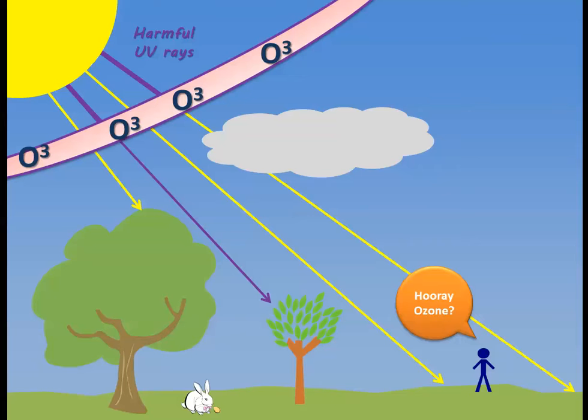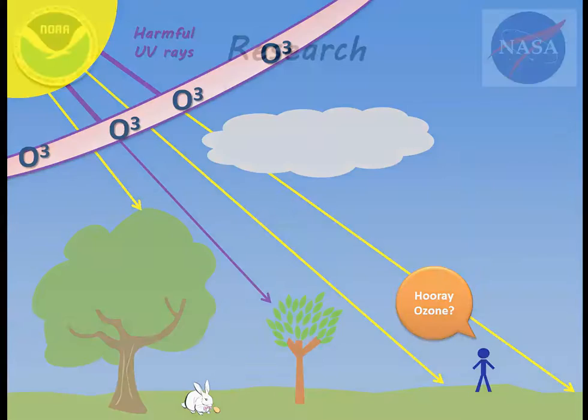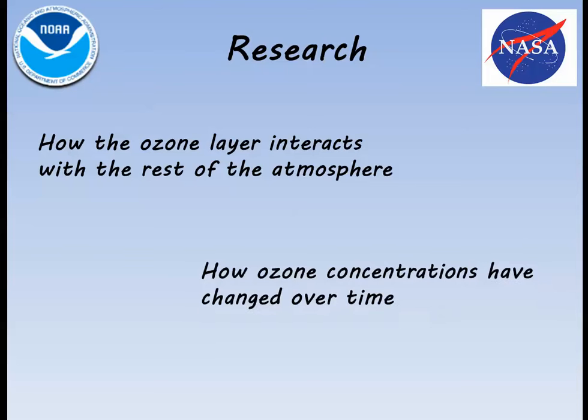Now that we know why ozone is important, why do we need to measure it? Most all research on ozone is done by NOAA and NASA. Research ranges from how the ozone layer interacts with the rest of the atmosphere, to most importantly how ozone concentrations are changing.